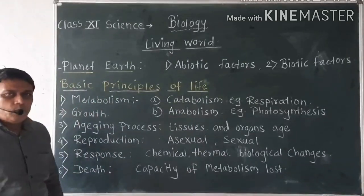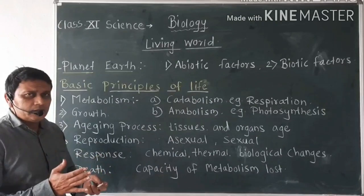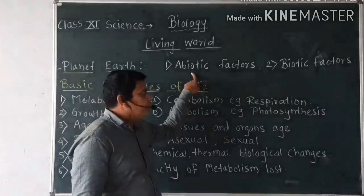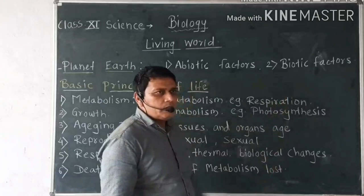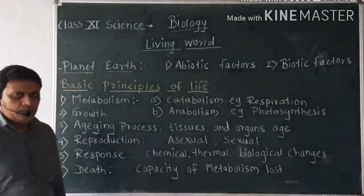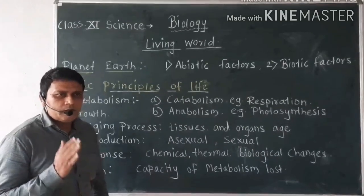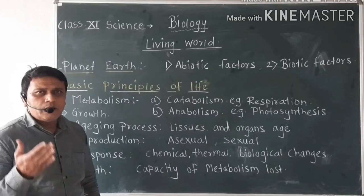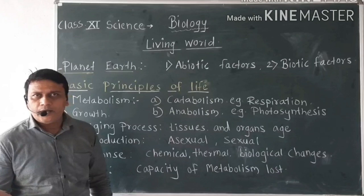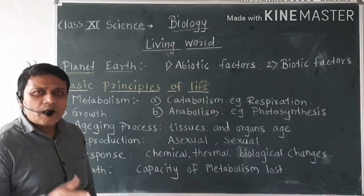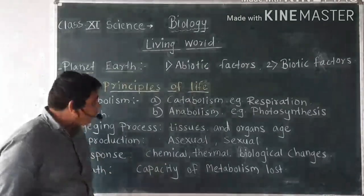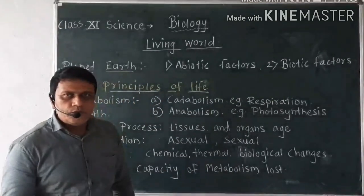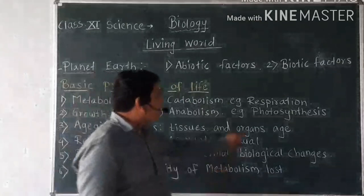We all live on planet Earth, and on planet Earth there are two main factors. The first one is the abiotic factor and the second one is the biotic factor. Abiotic factors are those which are non-living — they do not show different life processes. For example, water, air, soil, and mountains are all non-living things and they come under the term abiotic factors.